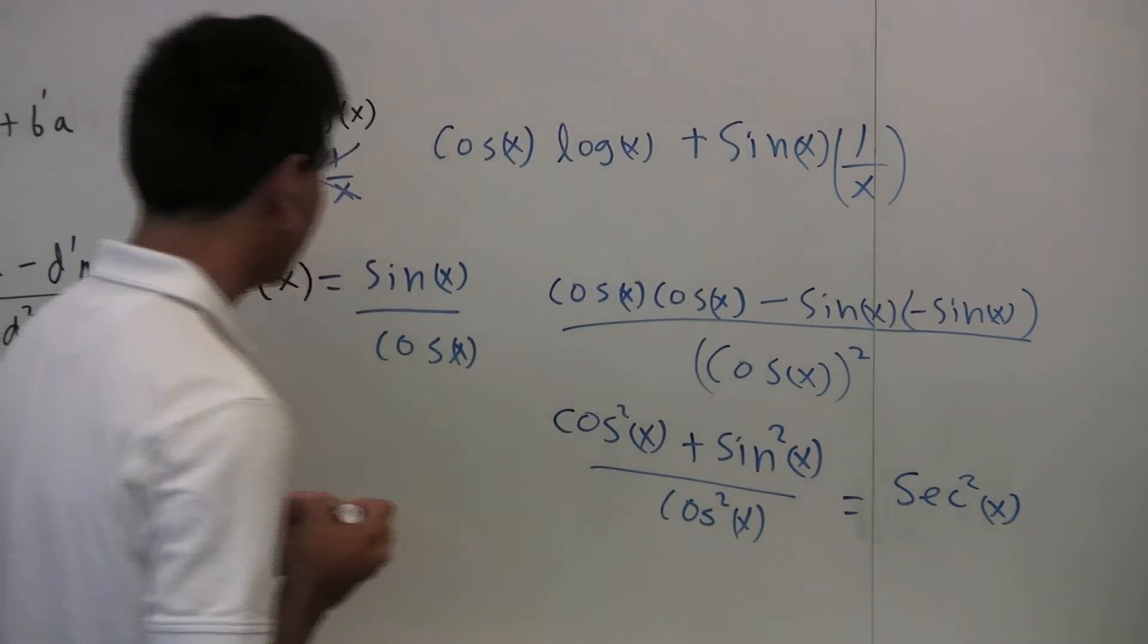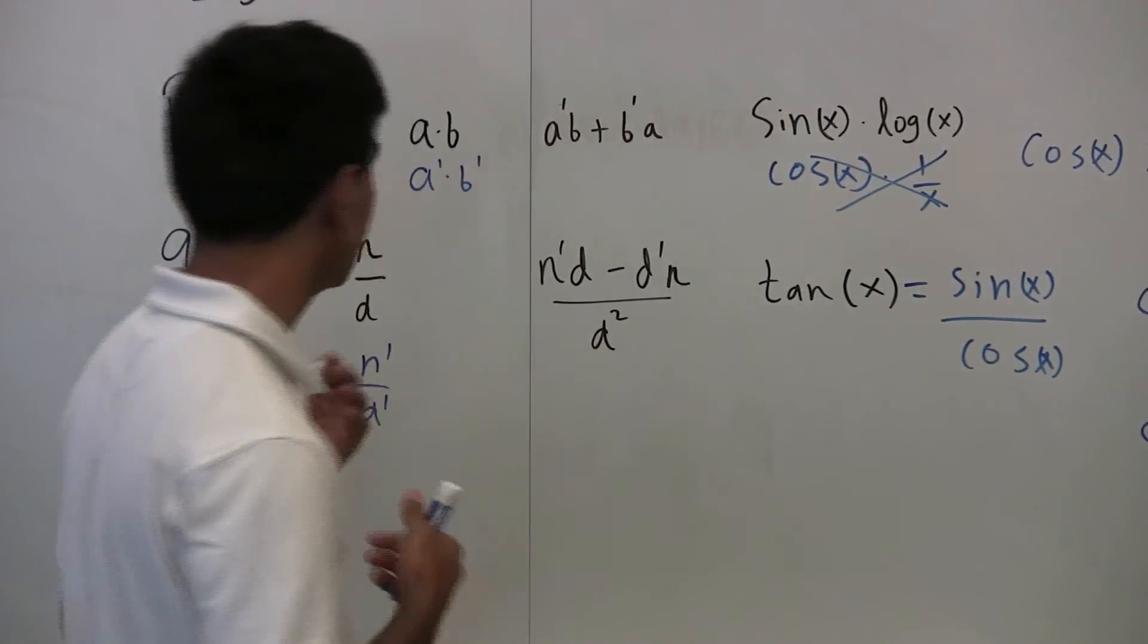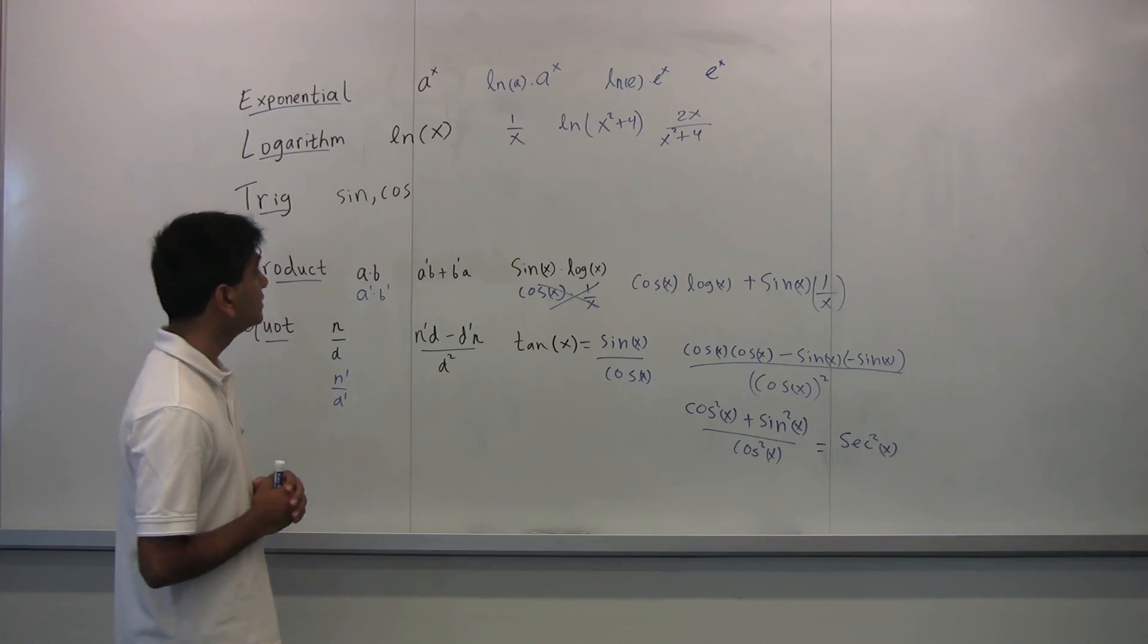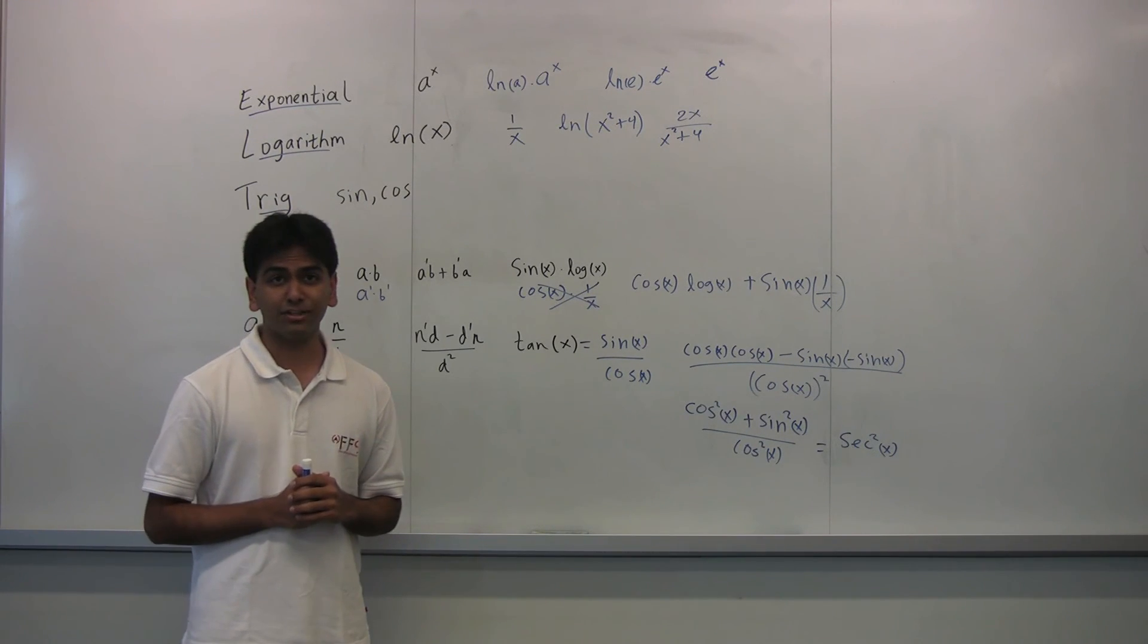So the derivative of tangent of x is actually secant squared of x. And you can figure that out using the quotient rule. Well, I hope these simple derivative shortcuts help you find derivatives quicker. And remember, calculus is fun.